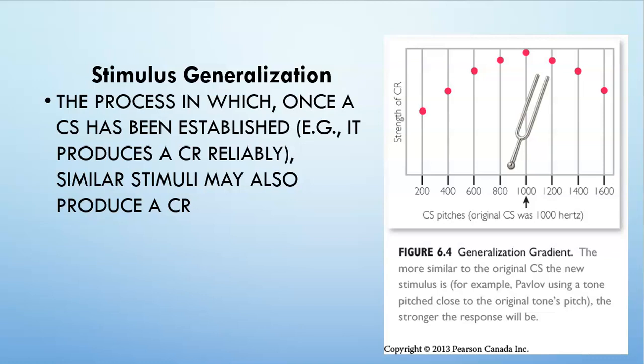Now let's talk about stimulus generalization. This is the process in which, once a conditioned stimulus has been established, similar stimuli may also produce a conditioned response. For example, if we were using a tuning fork at 1000 Hz as our conditioned stimulus, even using a tuning fork of a different frequency can still produce a conditioned response. That's stimulus generalization.